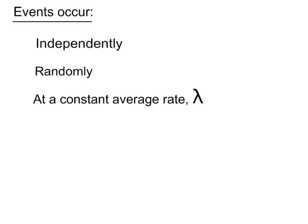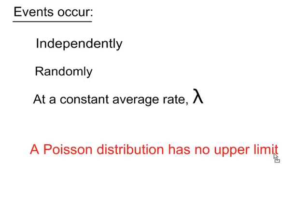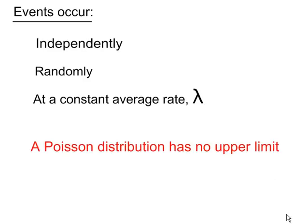Another thing to consider is that the Poisson distribution has no upper limit. For example, a car service centre which stocks tyres, exhausts, batteries, and so on — if you are modelling the number of batteries sold per day, you may find that the number sold is limited to what's in stock, so you have an upper limit, and a Poisson model may not be totally suitable.